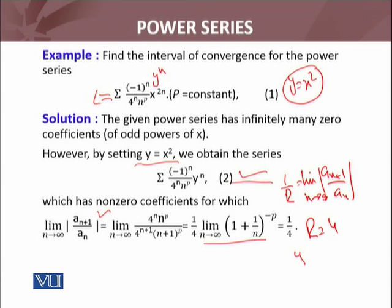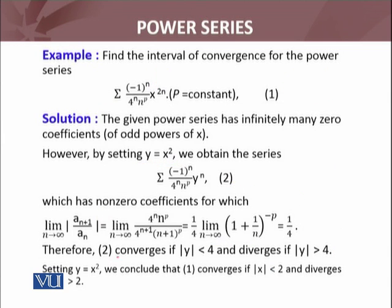Now y was equals x squared, we utilize that. Therefore, equation 2 converges if |y| < 4 and diverges if |y| > 4. Setting y equals x squared, the original series will converge if |x| < 2 and diverges if |x| > 2.